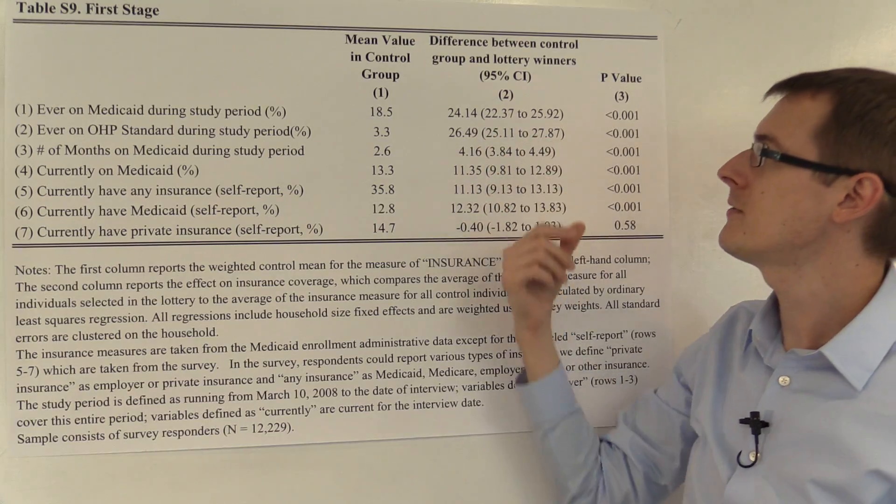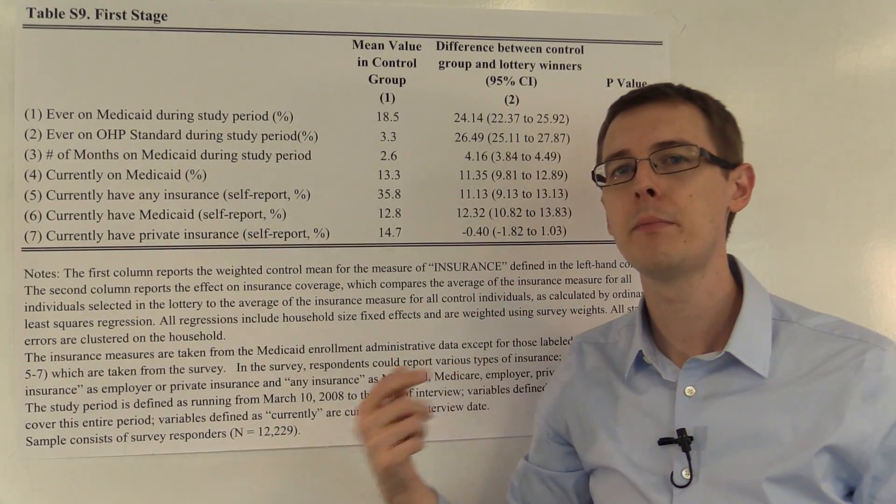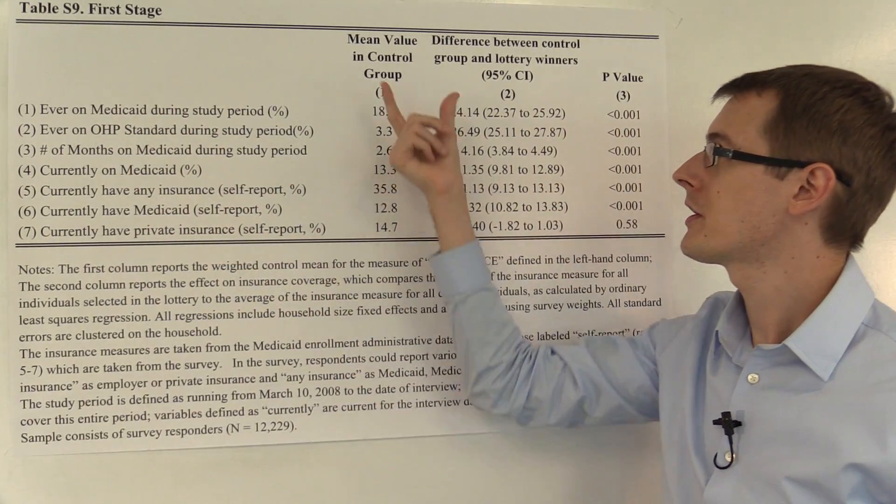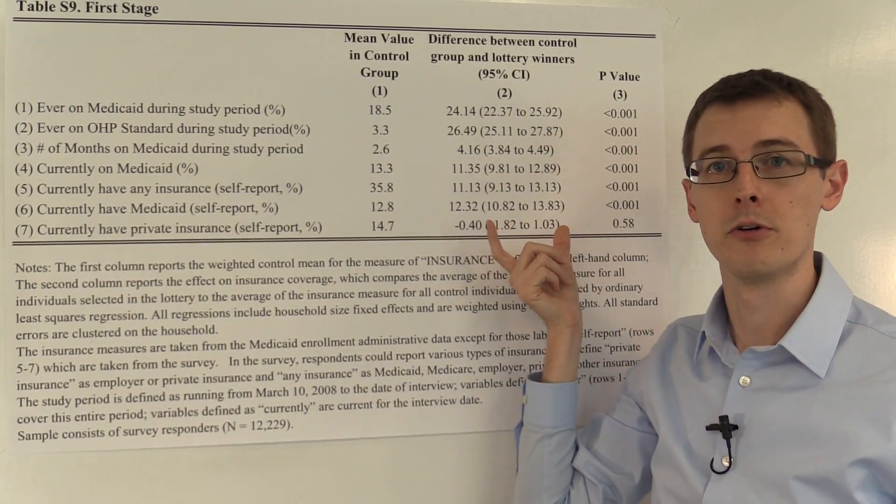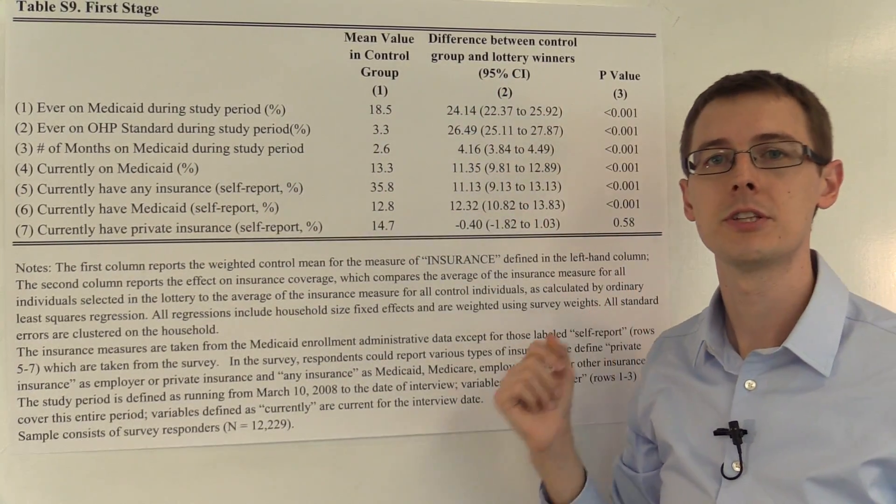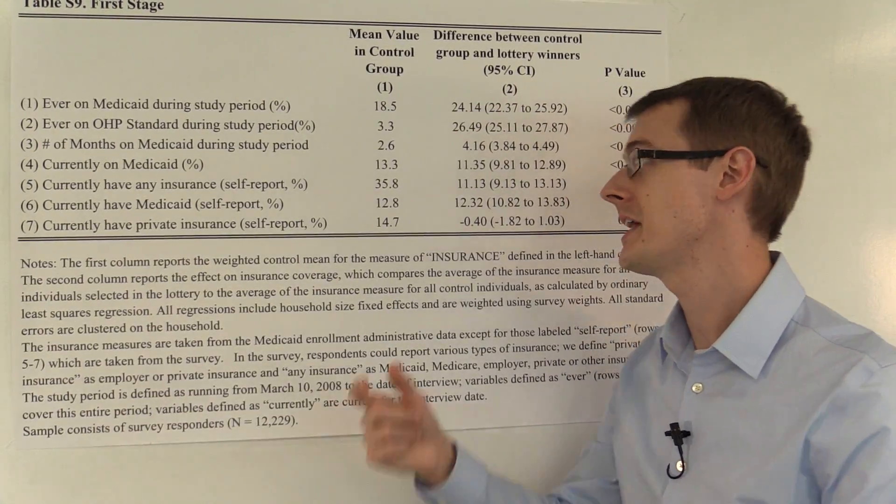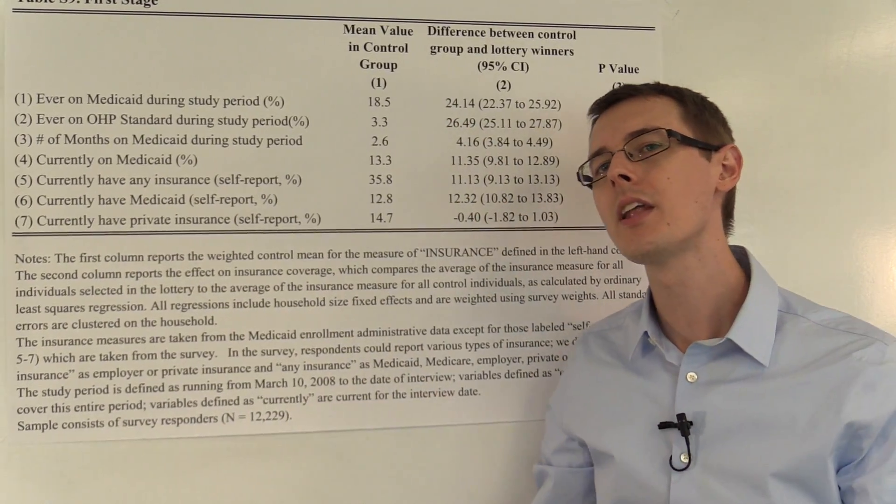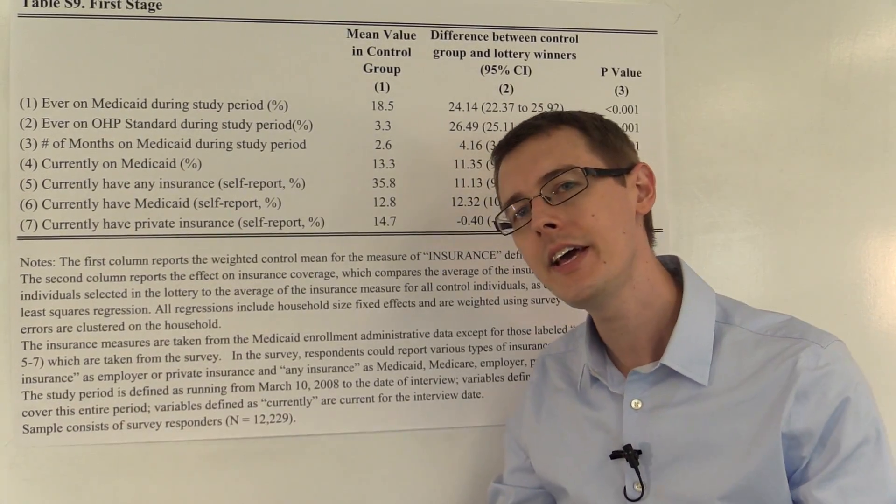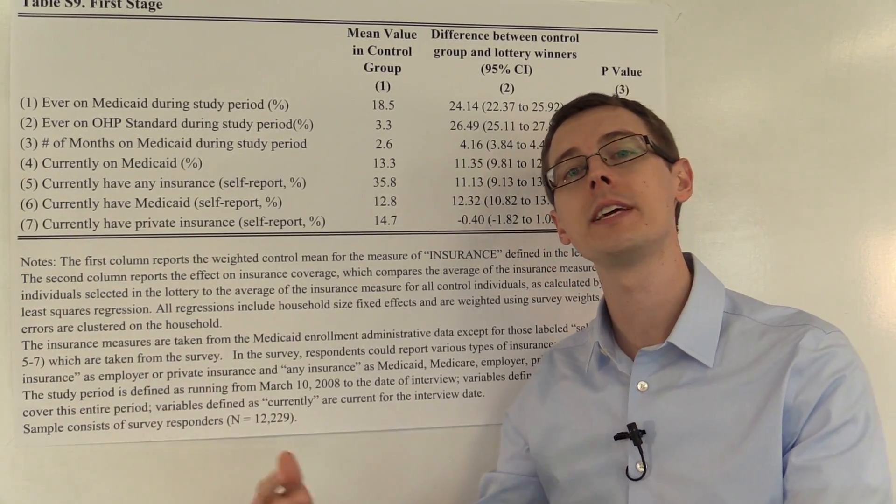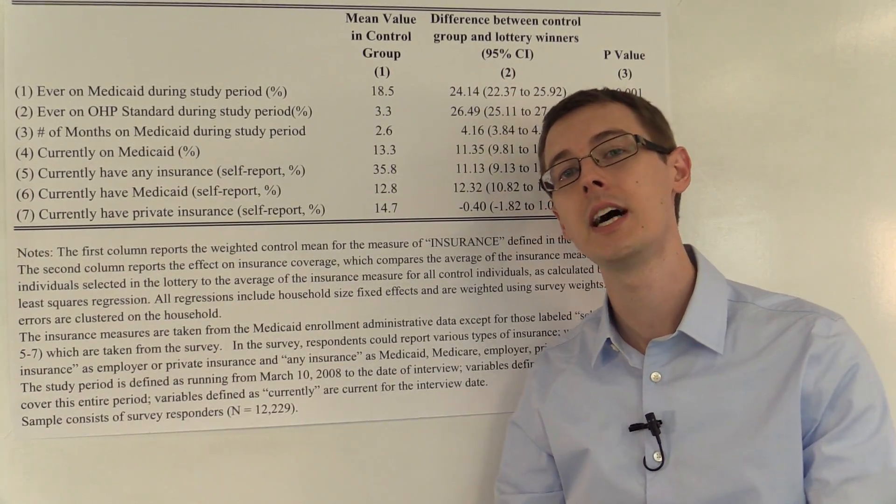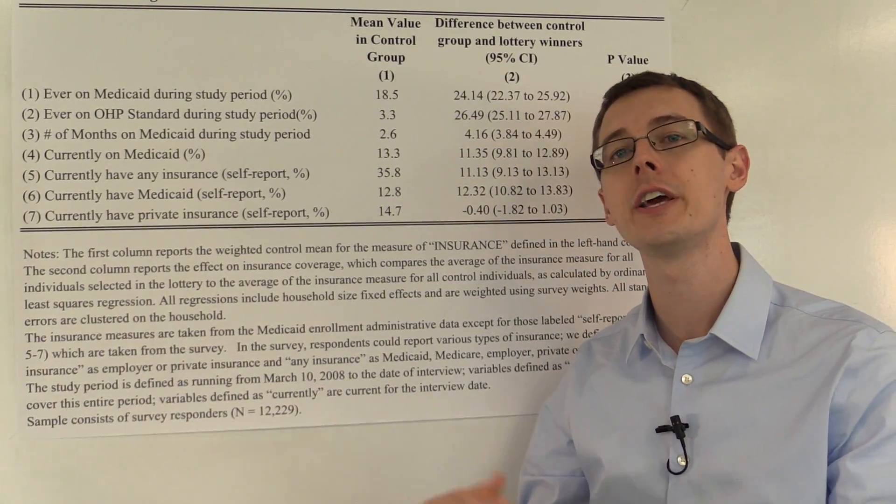This second column shows the difference in the percentage of people who received Medicaid between the control groups and the treatment groups, or the lottery winners, the people who were assigned to get Medicaid. There's a very large number, 24%. So winning the lottery greatly increased your chance of actually getting Medicaid. It didn't push it up to 100% because we had noncompliance, but it largely increased it.